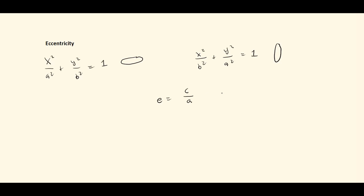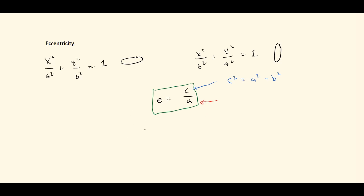We know that c is the distance from the center to the foci. Previously we would find c using the equation c squared equals a squared minus b squared, where a is the bigger value and b is the smaller one. And a is the distance from the center to the vertex along the major axis. The eccentricity of an ellipse ranges from zero to one.